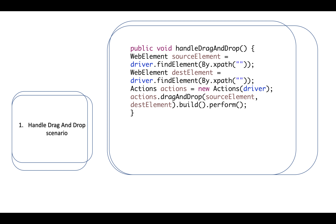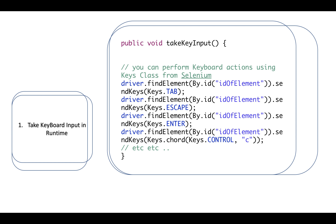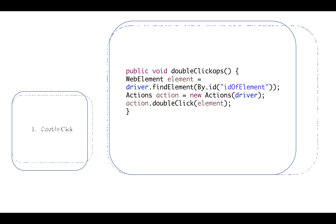How to perform drag and drop: use the Actions class — actions.dragAndDrop(source, destination).build().perform(). Source and destination are two different web elements. For keyboard input during script execution, you can use the Keys class or the Robot class. Using the Keys class: Keys.TAB, Keys.ESCAPE, etc.